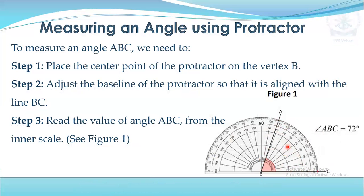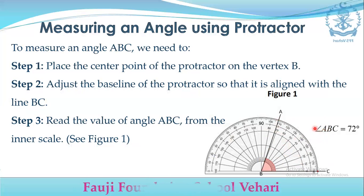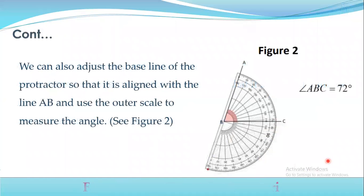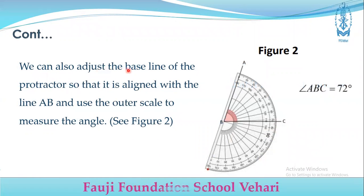The angle is 72 degrees. We denote this as angle ABC equals 72 degrees. You can also adjust the baseline of the protractor so that it is aligned with line AB and use the outer scale to measure the angle.